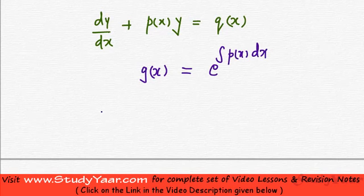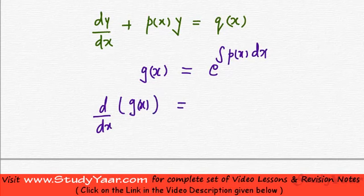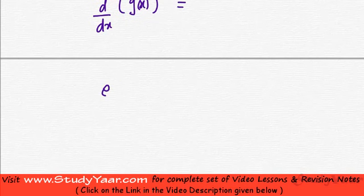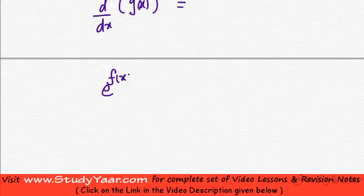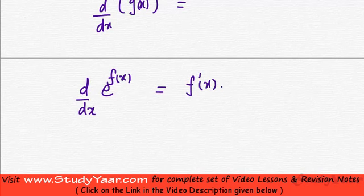Now let us see what do I get if I differentiate it. d by dx of g(x) is going to be what? Look, if you have e raised to power f(x), then d by dx of e raised to power f(x) is going to be what? It is going to be f'(x) dot e raised to power f(x).